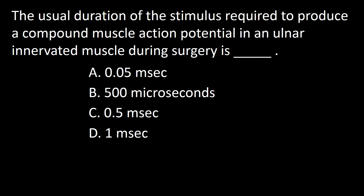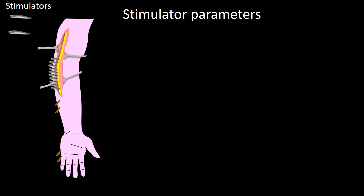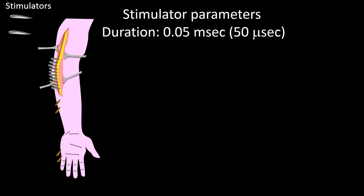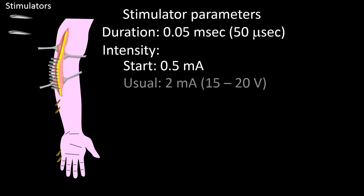Next question: the usual duration of a stimulus required to produce a compound muscle action potential in an ulnar innervated muscle during surgery is A: 0.05 ms, B: 500 ms, C: 0.5 ms, D: 1 ms. A stimulus to produce an action potential in the ulnar nerve should last about 0.05 ms, that is 50 microseconds. The intensity should start at 0.05 mA; the usual intensity required is about 2 mA or 15 to 20 volts.